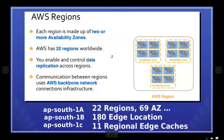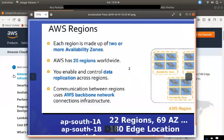There are 180 edge locations and 11 regional edge caches. You can push the data from CloudFront. CloudFront is a CDN — Content Delivery Network. You can distribute your data through CloudFront to all users.